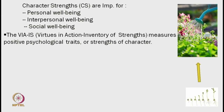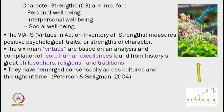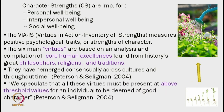Let us discuss the Value in Action Inventory of Strengths, which identifies 24 character strengths under 6 virtues — positive personality traits or strengths of character. Peterson and Seligman identified 6 main virtues based on an analysis of core human excellence found in histories, great philosophers, religions, and traditions. These 6 virtues are not culture-specific; they have universal tendency, emerging consensually across cultures and throughout time.